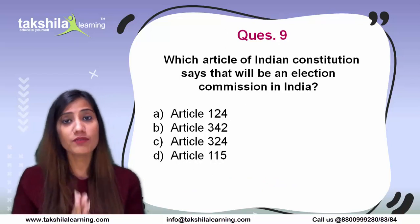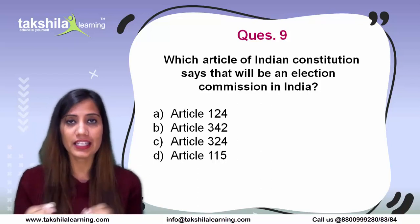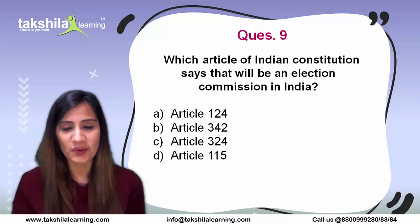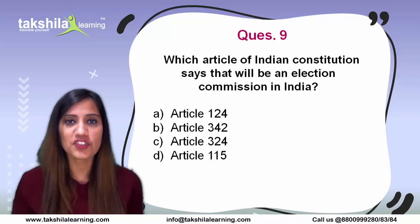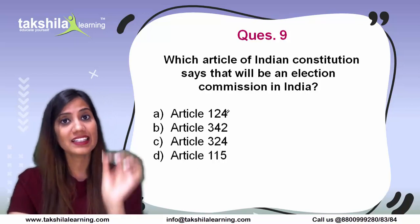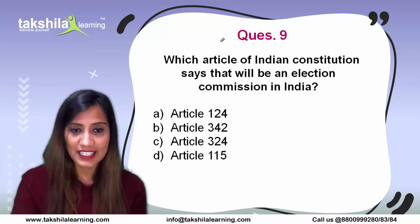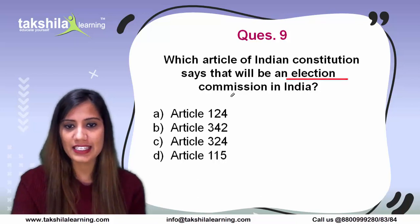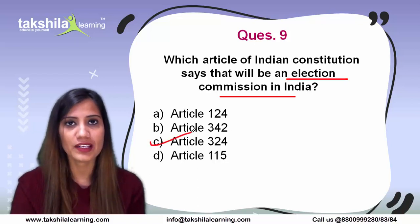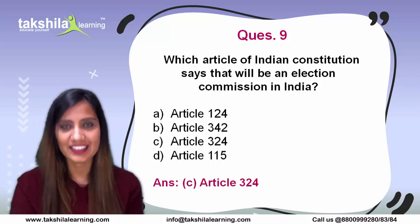Next question: which article of the Indian Constitution establishes that there shall be an Election Commission in India? You should know this article. The answer is Article 324 — Article 324 says that there shall be an Election Commission in India, which is why the Election Commission exists.